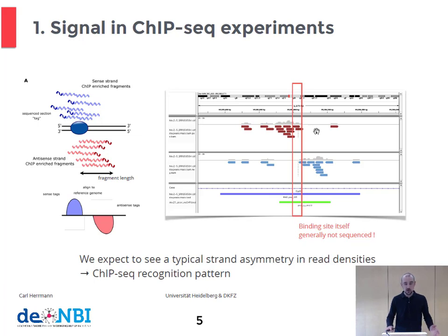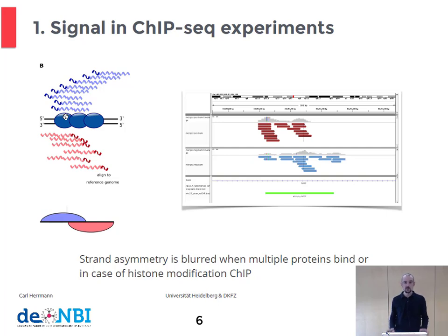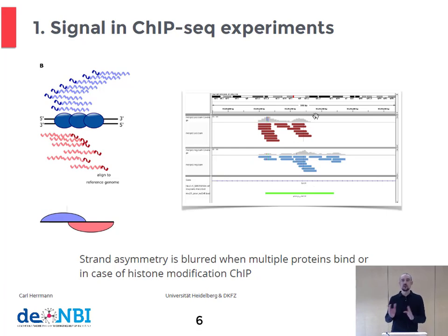In practice, it is often slightly different — especially if multiple proteins bind, or in the case of a histone modification. The asymmetric pattern I showed in the previous slide is blurred, and we have more of a pattern like at the bottom left. Here is how it could look in real data: we don't recognize very easily this asymmetry and shift between the plus and minus strand, but still this is a very typical signal with two peaks on each strand and the shift between them.